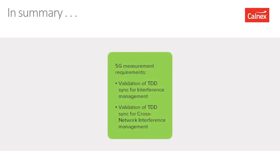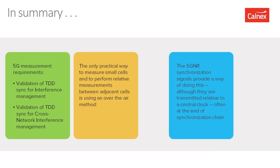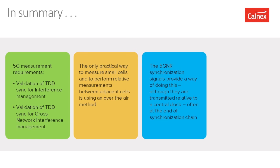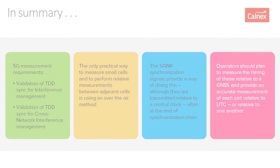In conclusion, 5G has strong requirements to measure signals. We need to validate TDD synchronization for interference management due to the many sources of interference. With the removal of guard bands, we also need to validate synchronization for interference management between networks, whether in the same country or across boundaries. The only practical way to measure small cells or another operator's network is over the air. The SSB signals in 5G provide a way of doing this, and operators should plan to measure timing relative to GNSS and from one base station to another. Calnex is working on enabling operators to do exactly that.